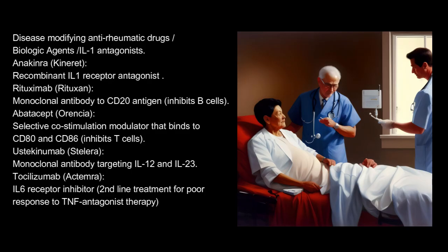Additional biologic disease-modifying antirheumatic drugs include: Anakinra (Kineret), a recombinant IL-1 receptor antagonist; Rituximab (Rituxan), a monoclonal antibody to CD20 antigen that inhibits B-cells; Abatacept (Orencia), a selective co-stimulation modulator that binds to CD80 and CD86 and inhibits T-cells; Ustekinumab (Stelara), a monoclonal antibody targeting IL-12 and IL-23; and Tocilizumab (Actemra), an IL-6 receptor inhibitor used as second-line treatment for poor response to TNF antagonist therapy.